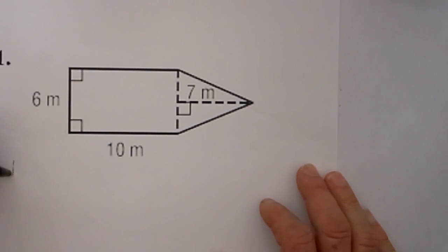We know that the area formula for a rectangle is equal to length times width. So we will do a length of 10 times width of 6, which equals 60.